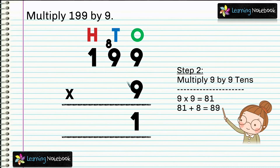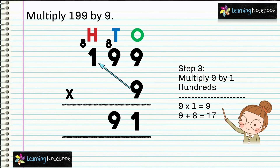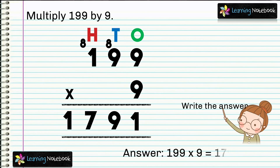In step 2, multiply 9 by 9 which equals to 81, but we also have a carry of 8 here. So we will add 8 and 81 and we get 89. Again we regroup 89: carry 8 to the hundreds place and write 9 in the answer. In step 3, multiply 9 by 1 which equals to 9, and add carry 8 to 9 and we get 17. So the product is 1791. 199 into 9 equals to 1791.